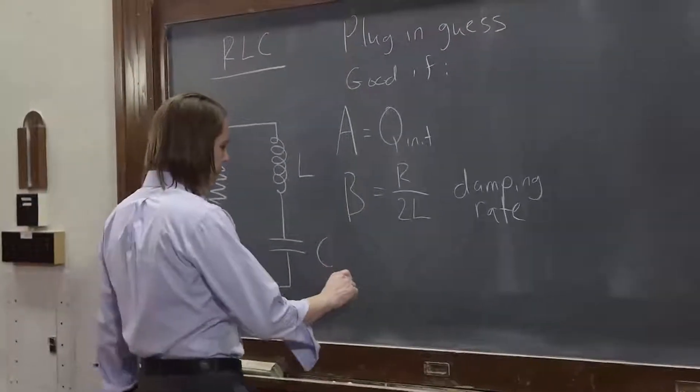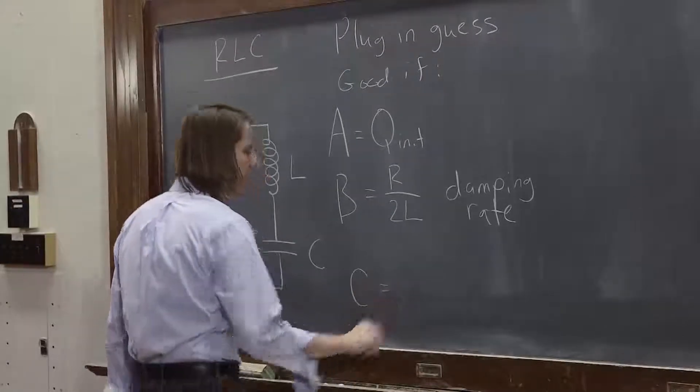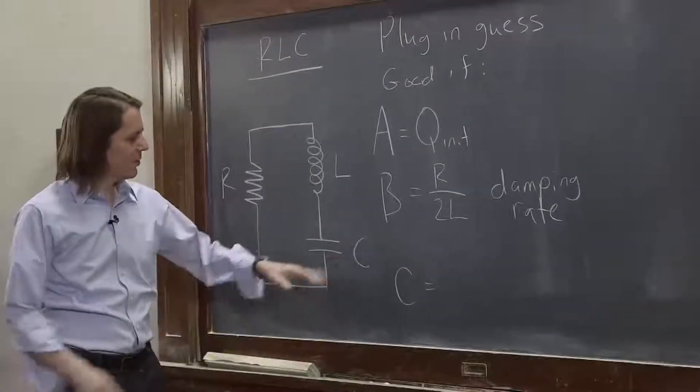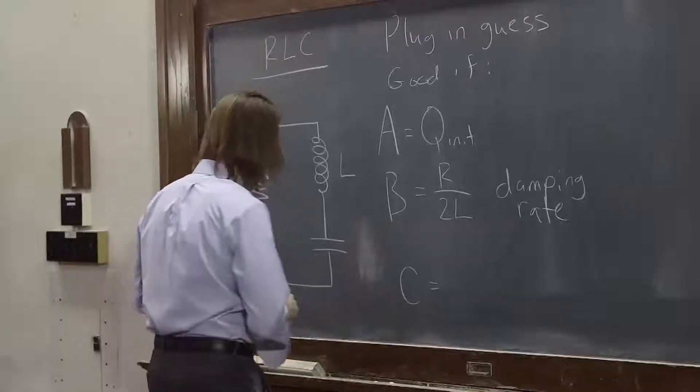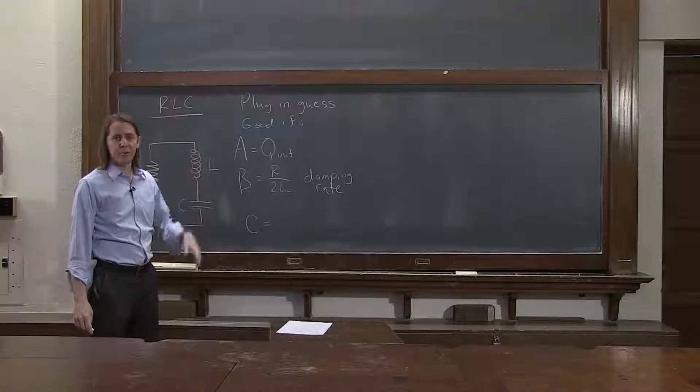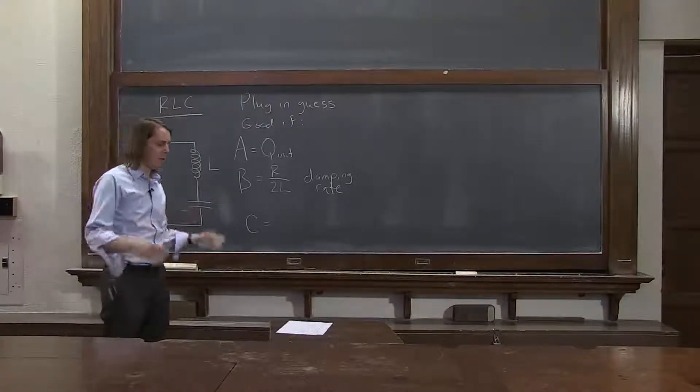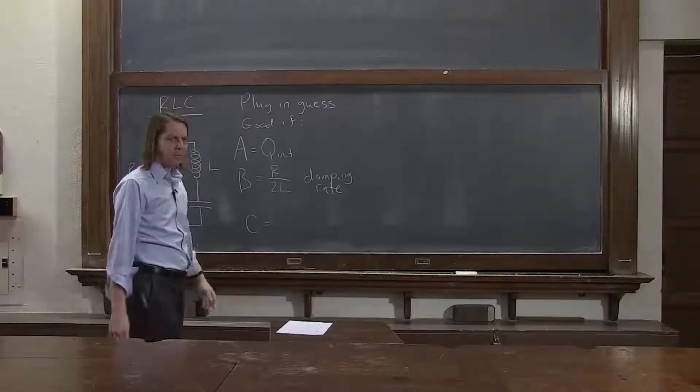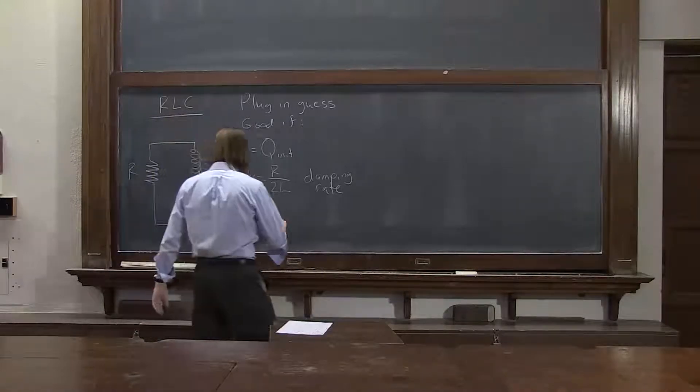And then C, and here's something that happens in physics. There are two C's. So here, C is the capacitance of this circuit. But in the answer, C was one of the parameters we stuck in the answer. You only have so many letters, it happens. You have to get it out of context. Sometimes it's hard.